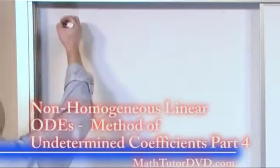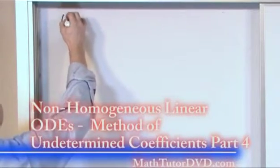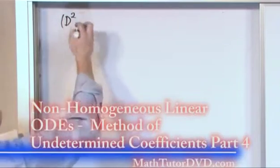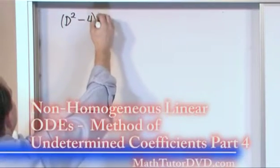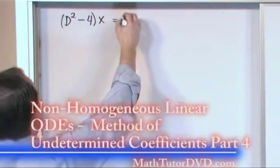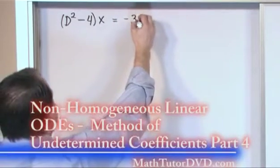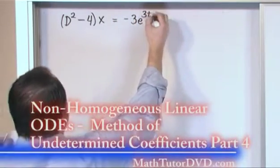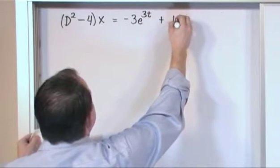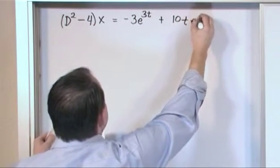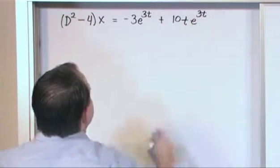All right, now for our next problem, we'll have, let's say, d squared, so second derivative, minus 4, operating on x of t is going to give us negative 3e to the 3t plus 10te to the 3t.